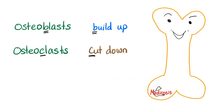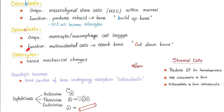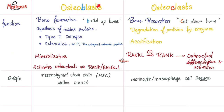Bone cells: the main bone cells are called osteocytes — osteo means bone, cyte means cell. Osteoblasts build up bone, and osteoclasts break down bone. They are mesodermal in origin. Osteoblasts synthesize matrix proteins — your bones are full of type 1 collagen. Osteoclasts break down bone by degrading proteins and by acidification — they essentially throw acid at the bone.